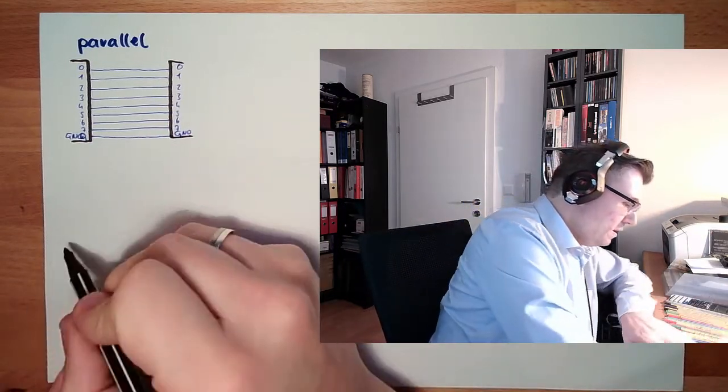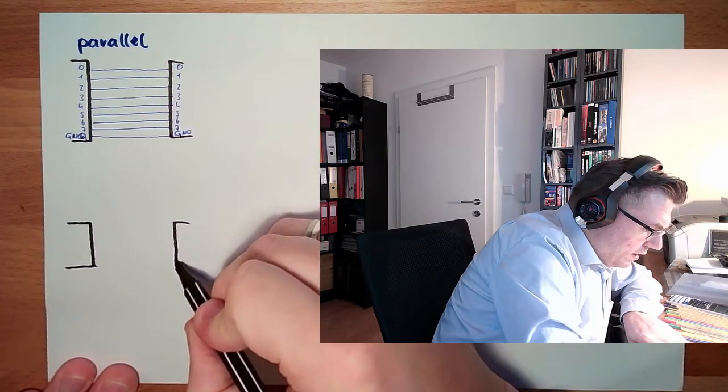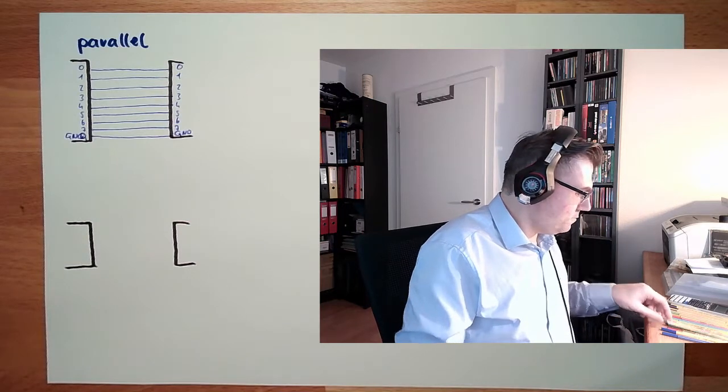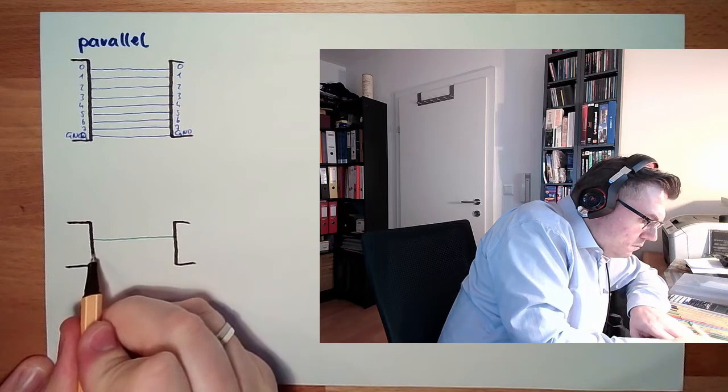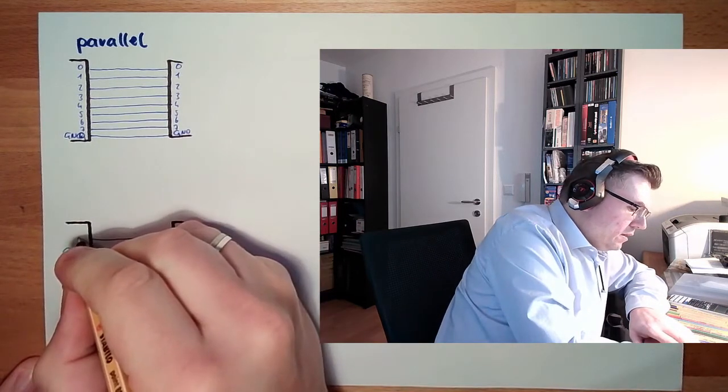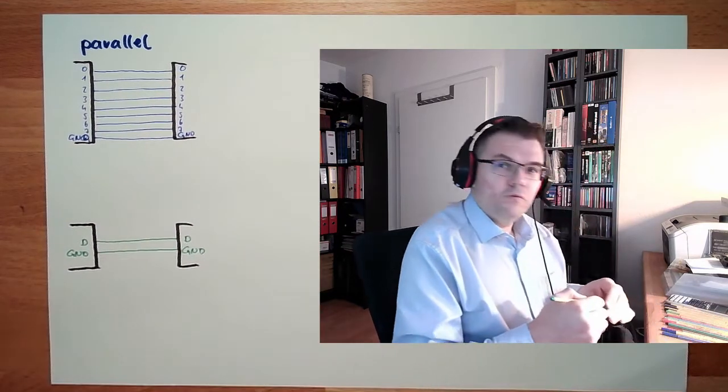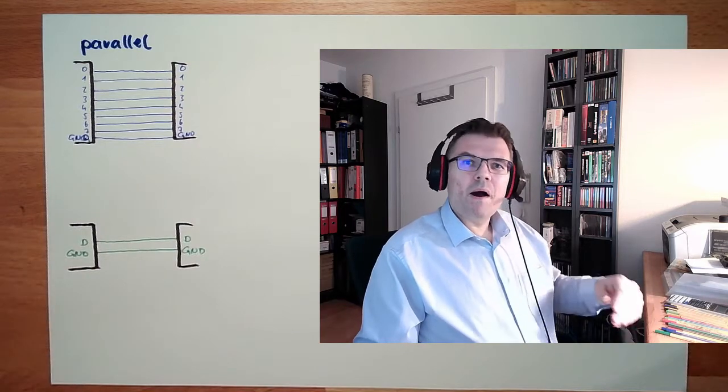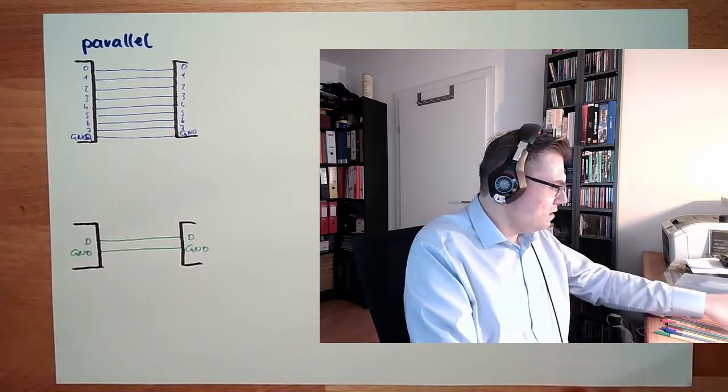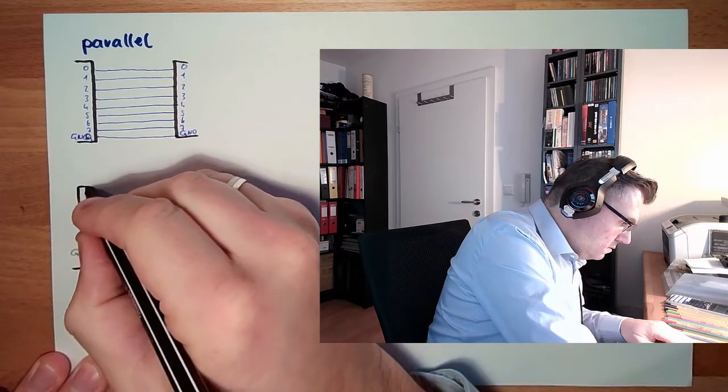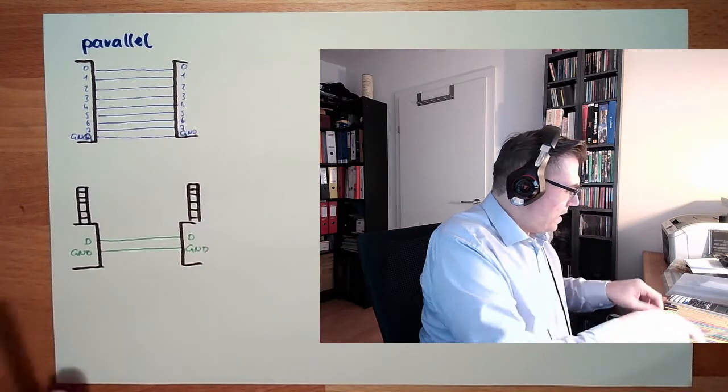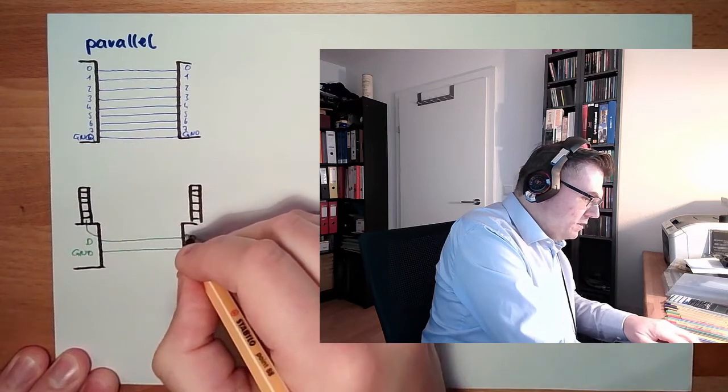And then there is the possibility that I do have here one system, the other system. I'm only using basically two wires. One of them is again ground, and the other wire is the so-called data wire. How do I transfer now a whole byte? Simply by putting one bit after the other on the wire. So I need to have here some sort of stack, and here some sort of stack.